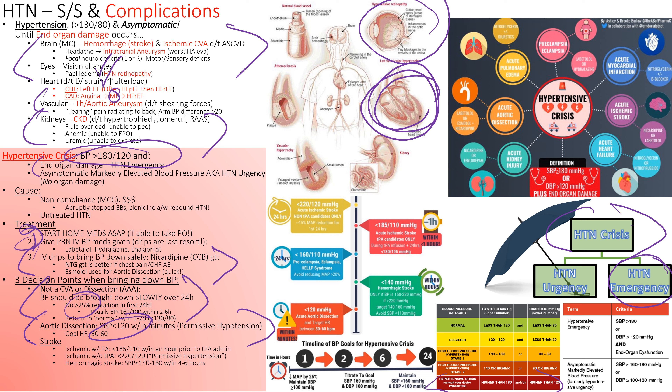Start home medications if the patient can swallow. Watch for rebound hypertension with clonidine — if it's missed in the ER due to poor medication reconciliation, the patient can shoot to 190 over 130. PRN IV push medications include hydralazine, labetalol, and nitrates. IV drips for ICU include nitroglycerin and nicardipine. The goal without stroke or aneurysm is a 25% blood pressure reduction over 24 hours.